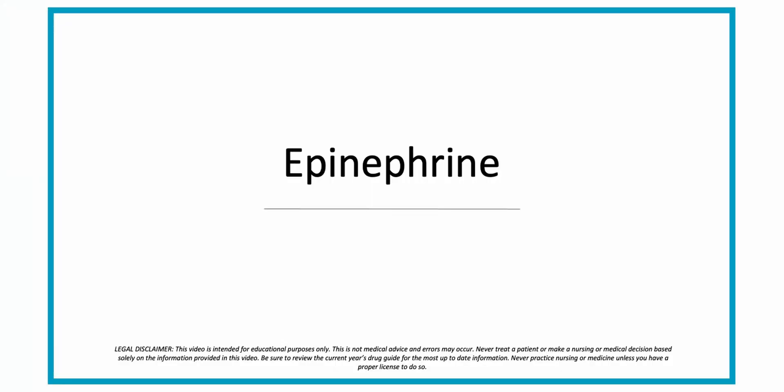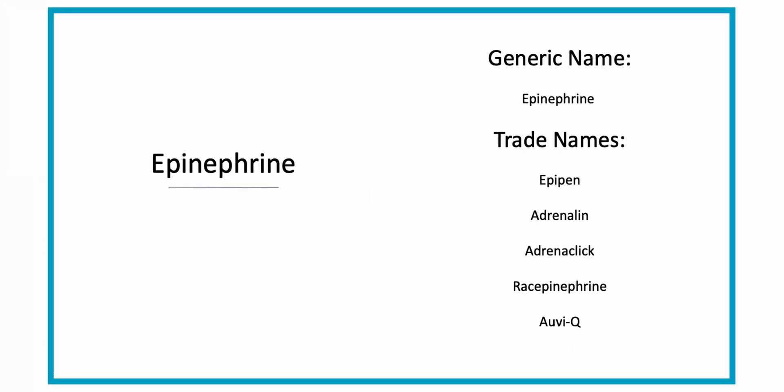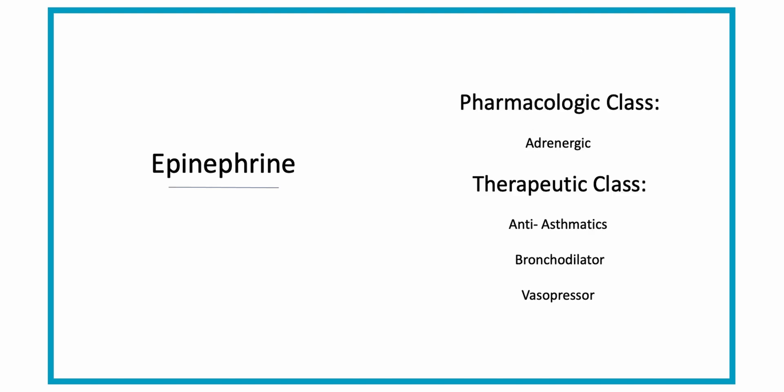Let's talk about epinephrine. The generic name is epinephrine and the trade names are EpiPen, Adrenaline, Adrenoclick, Racemepinephrine, and AbiQ. The pharmacologic class is an adrenergic, and the therapeutic class is an anti-asthmatic, bronchodilator, and a vasopressor.